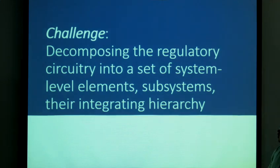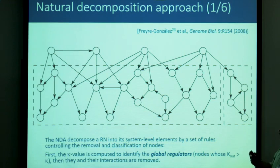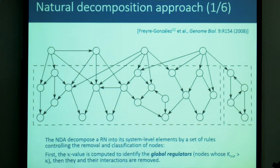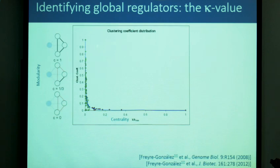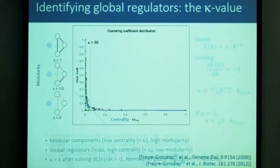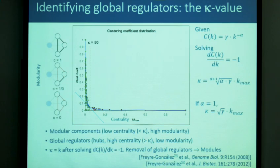The first challenge is to decompose the regulatory circuit, and we undertook this challenge a few years ago by developing the Natural Decomposition Approach. This approach uses a toy model of a bacterial regulatory network and decomposes it using a set of roles. The first step is to identify the global regulators — the hubs in the network. We exploit the clustering coefficient distribution to identify an equilibrium point between modularity and centrality for each node, which we call the kappa value. Nodes with connectivity higher than kappa are hubs; those with less connectivity than kappa are modular components.